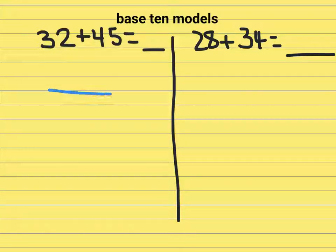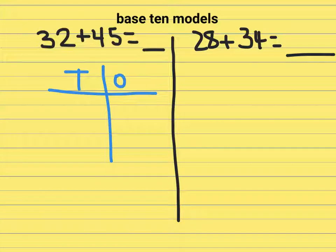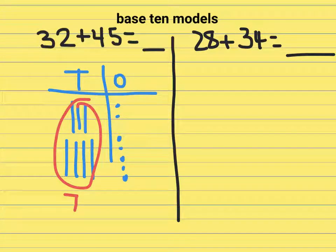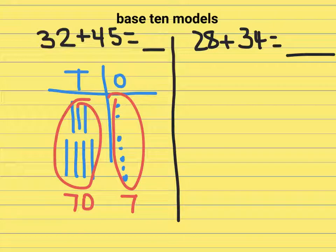So one way students can do this is they can draw their tens and their ones out. I'm going to draw out 32: ten, twenty, thirty, one, two. Then I'll draw 45: ten, twenty, thirty, forty, and one, two, three, four, five. Then I add all those up and we can see that I have seven tens so that's 70, and I have seven ones so that's 70 plus 7. The answer is 77.